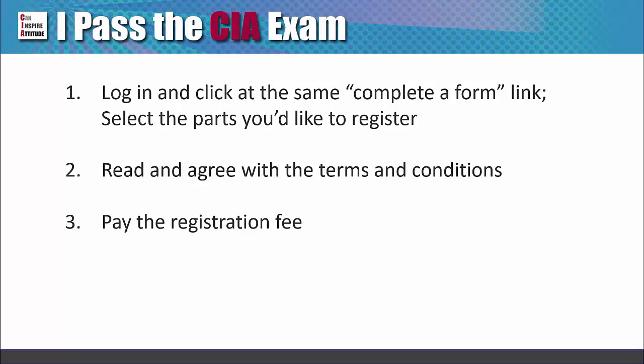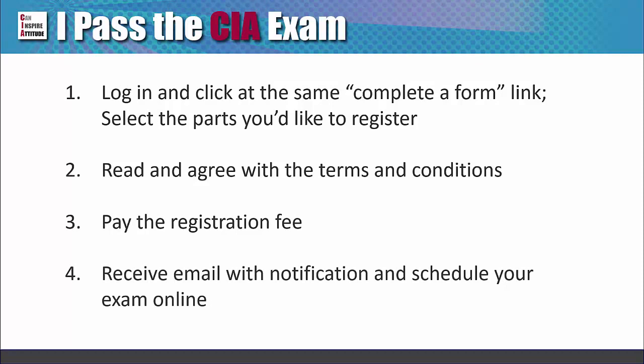If the payment is done by credit card through CCMS, the registration is processed immediately. The other methods may take several weeks. Step 4: After the registration is processed, you'll receive an email with the authorization to test notification and information on how to schedule your exam on the Pearson VUE website. It takes 48 hours for the data to update to the system.